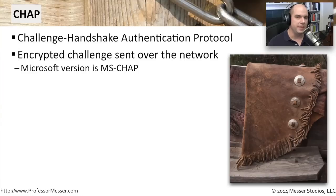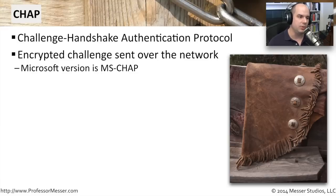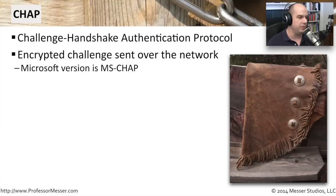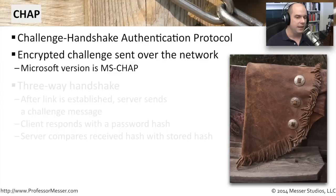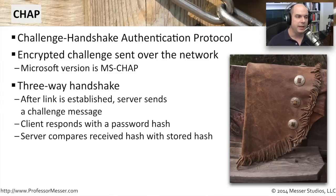One of those more secure methods is called CHAP — Challenge Handshake Authentication Protocol. This is an encrypted message sent across the network. Microsoft also has their own version called MSCHAP. This is a three-way handshake: a link is established to the server you want to authenticate to, and that server sends a challenge saying you'll have to prove you are who you say you are.